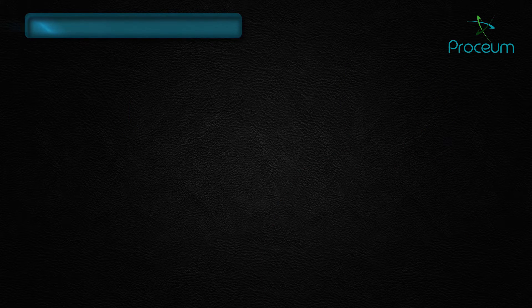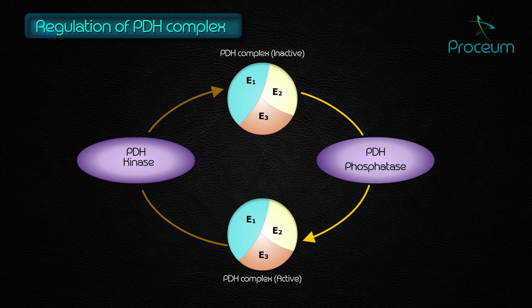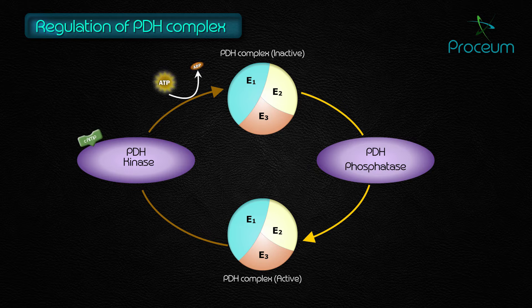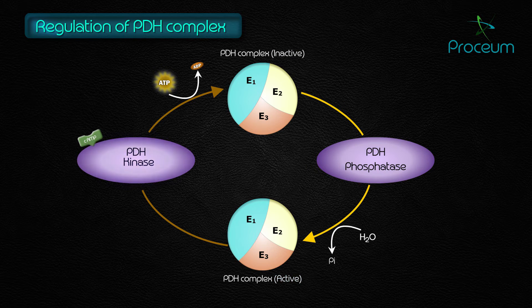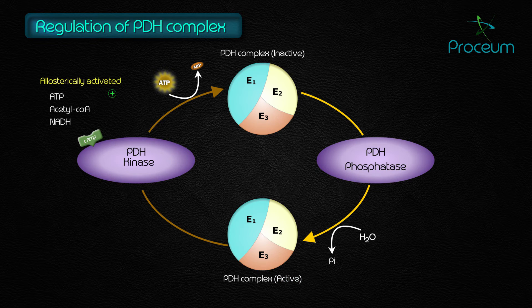Regulation of the pyruvate dehydrogenase complex involves phosphorylation and dephosphorylation. PDH kinase phosphorylates and inhibits the E1 component, whereas PDH phosphatase dephosphorylates and activates E1. The kinase is allosterically activated by ATP, acetyl-CoA, and NADH — thus, in the presence of these high-energy signals, the PDH complex is turned off.